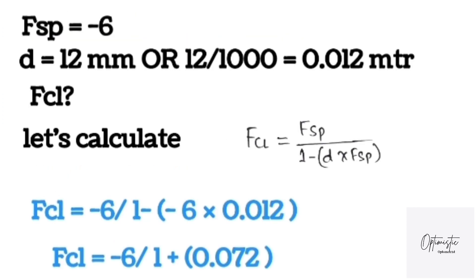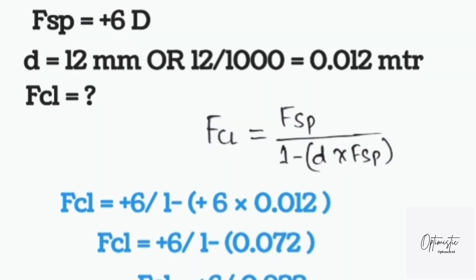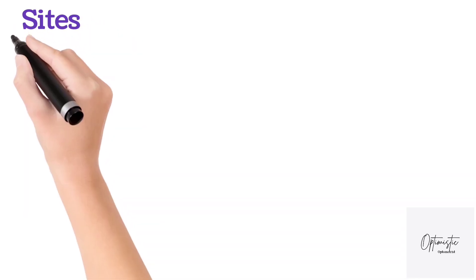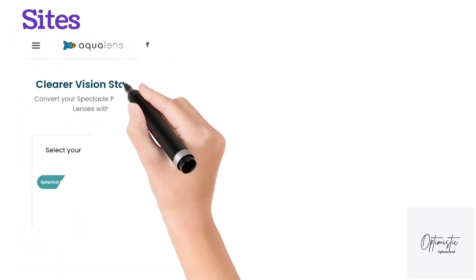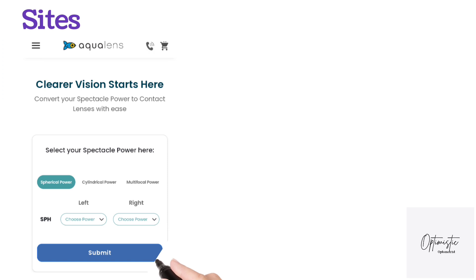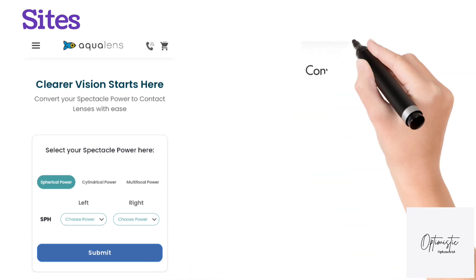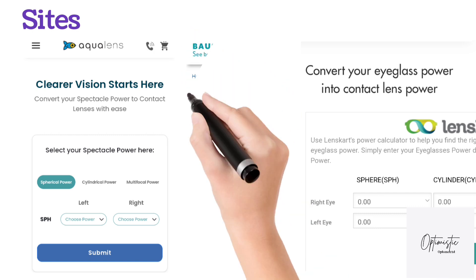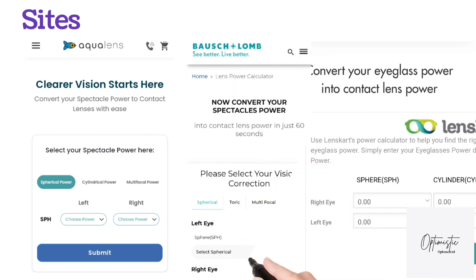Keep in mind the sign of the spectacle power, as it changes the calculation — in a minus prescription it becomes plus inside the bracket, and in a plus prescription it becomes minus. If you are not from the optometric field and just want to calculate your contact lens power from spectacle power, you can go online. There are reliable sites available, like Bausch & Lomb and lens card calculators, that you can try.